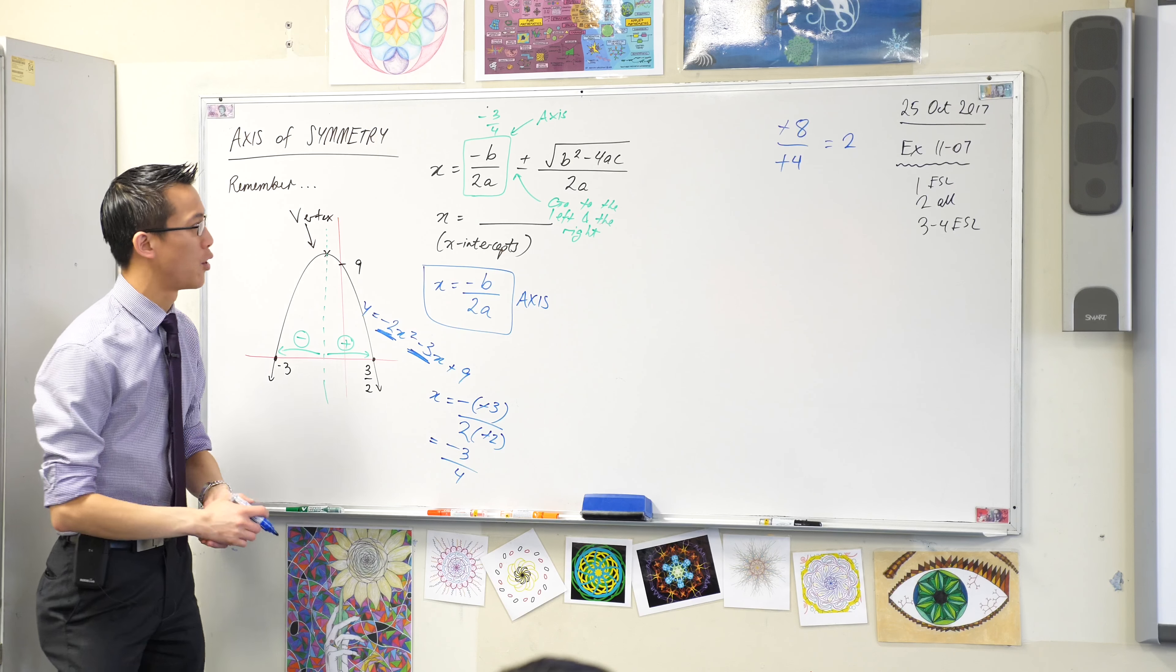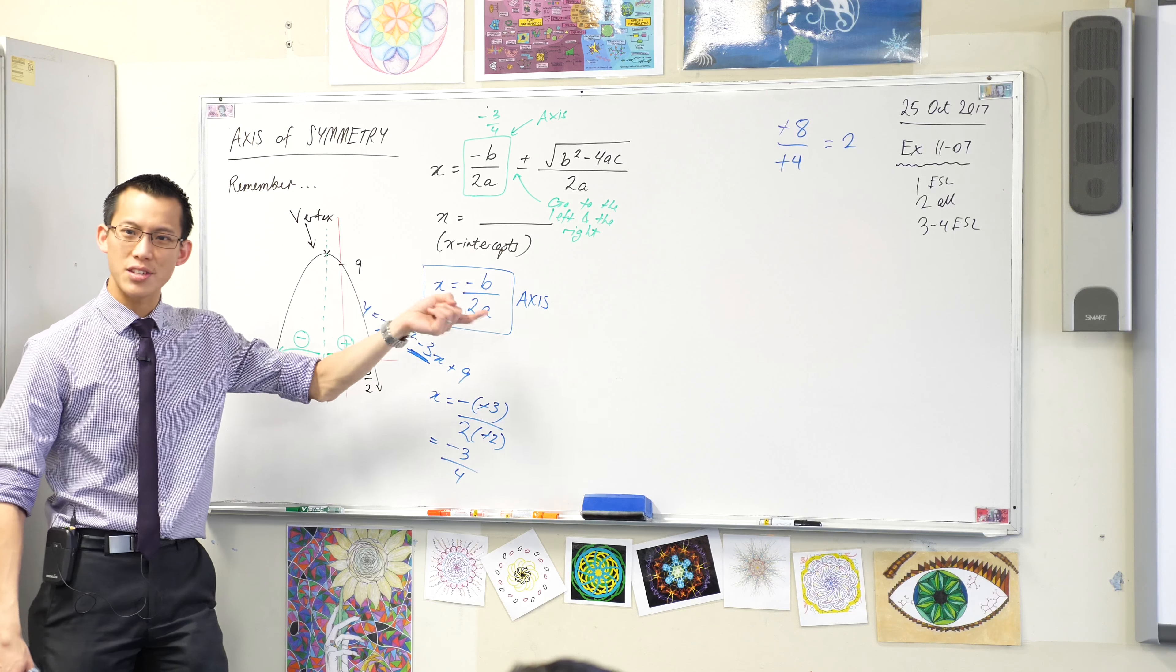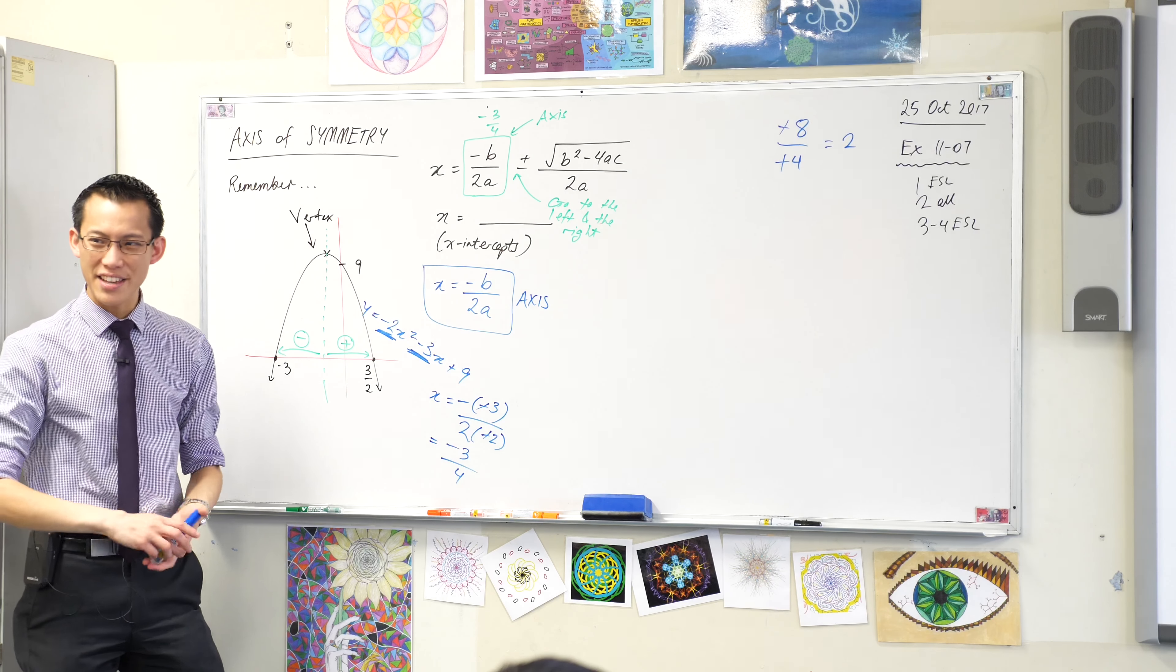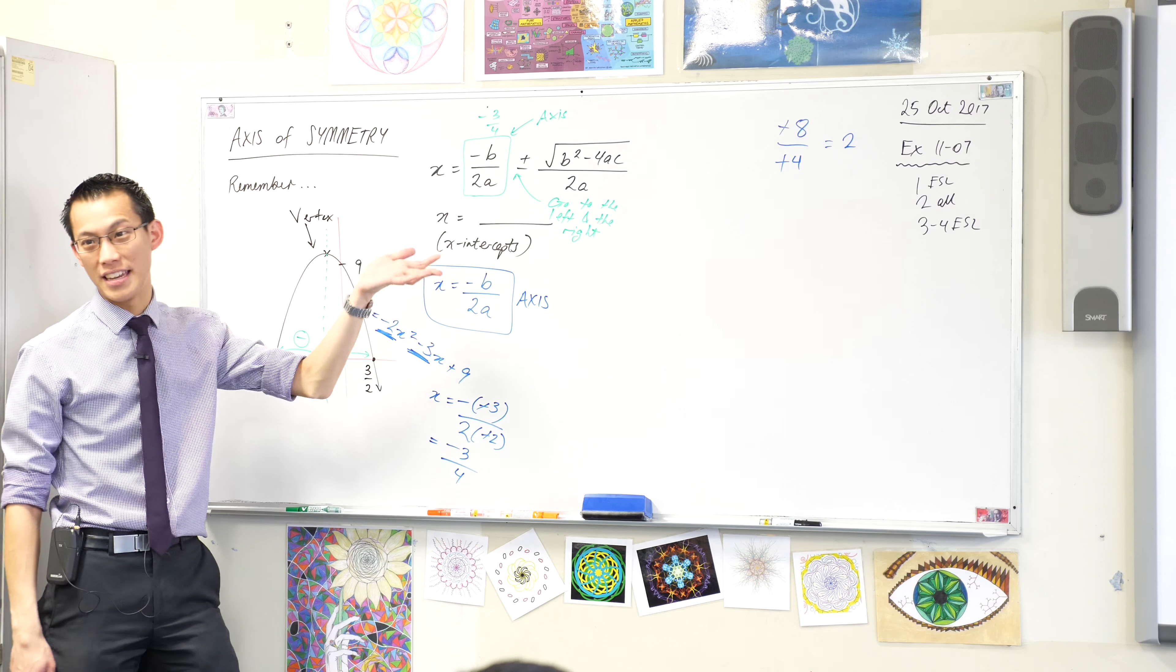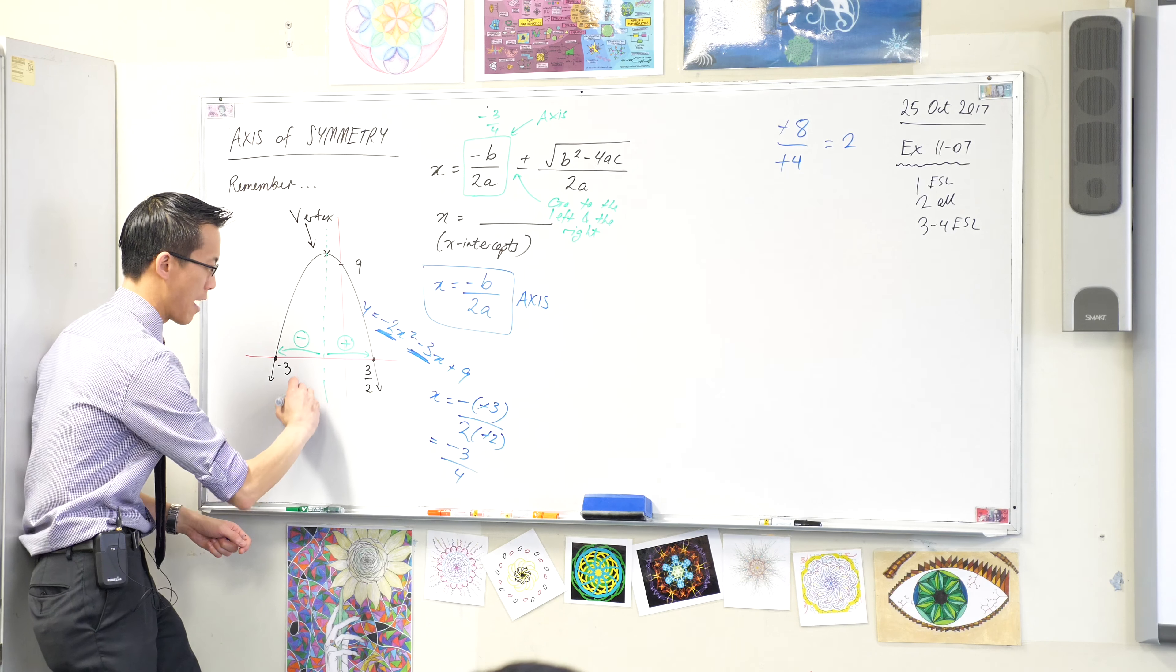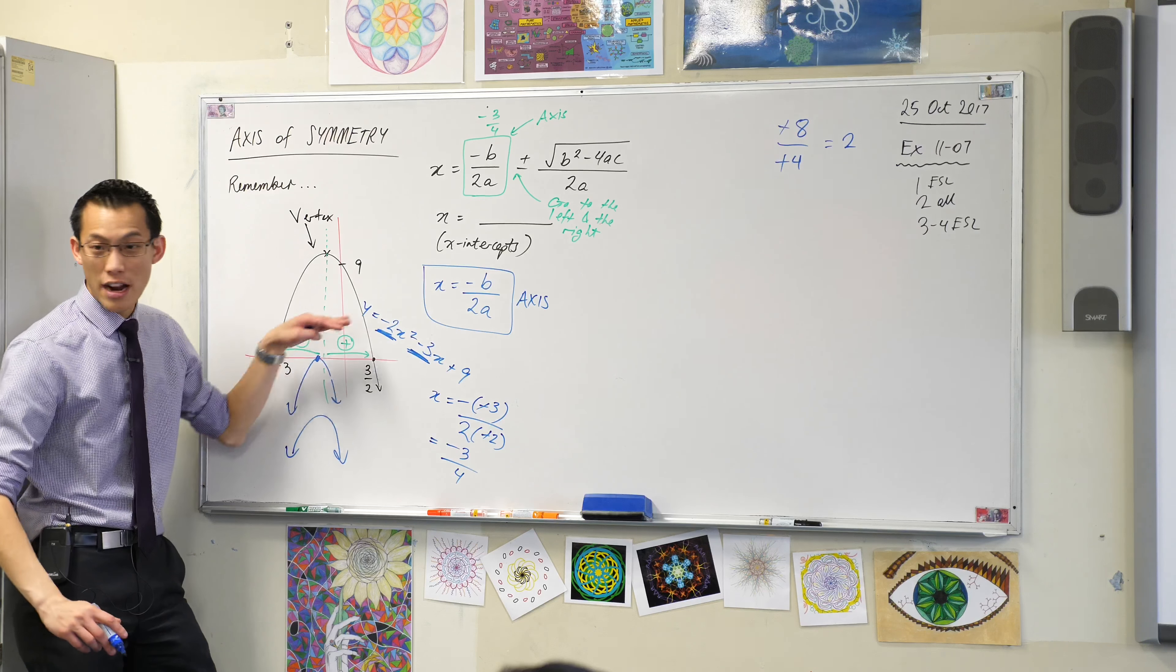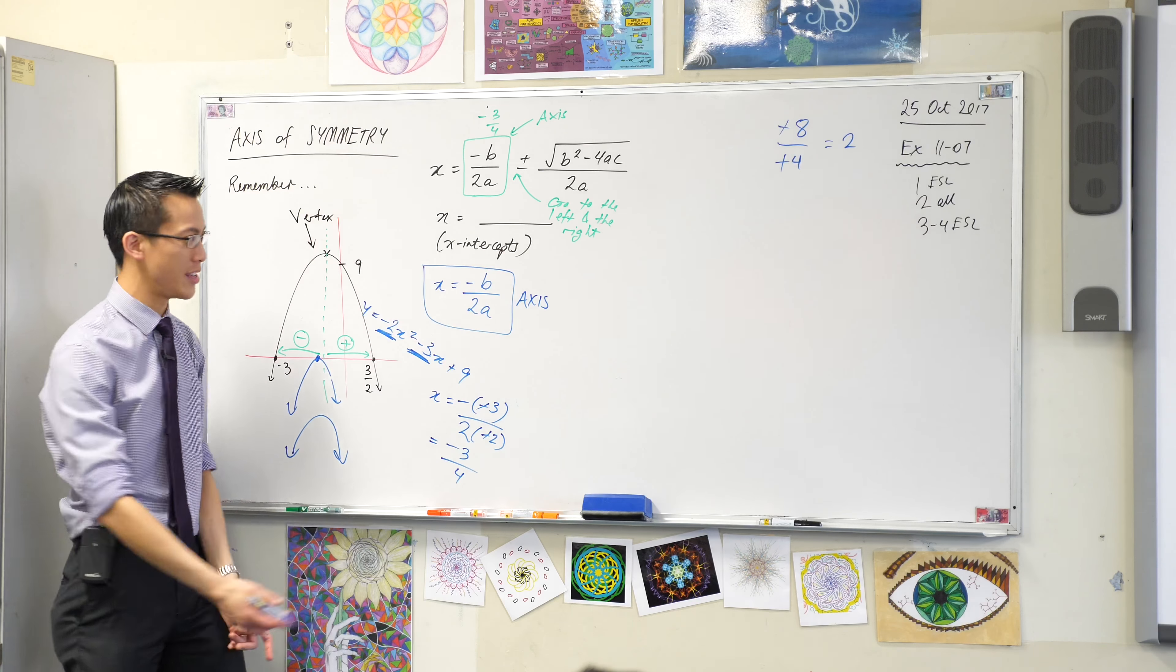One last note, which is really important. What's super useful about this is you can use this regardless of whether you have x-intercepts or not. Do you remember we said yesterday this gives you x-intercepts but you might not have any. You might have zero x-intercepts or one. This parabola would have exactly one x-intercept and this one has none. It never actually touches the x-axis at all. But you can still use this. You can always use this.